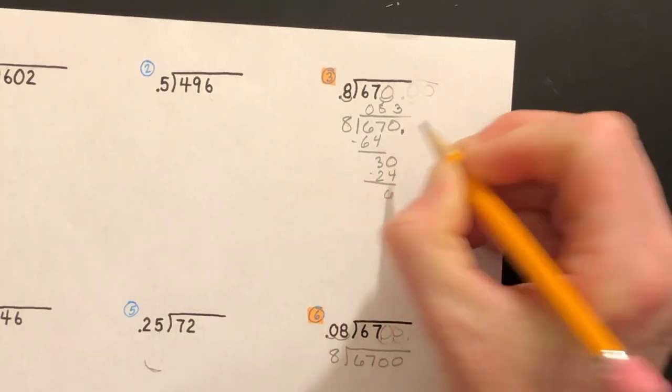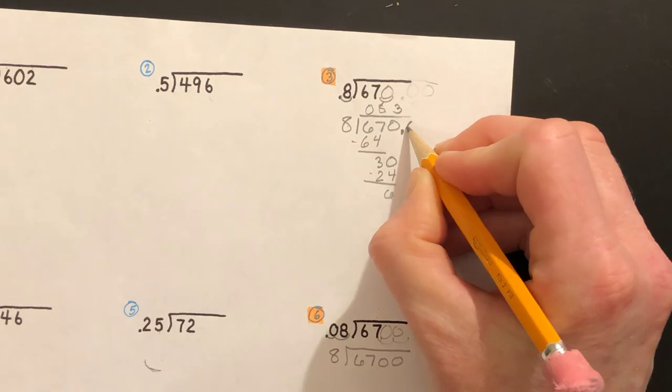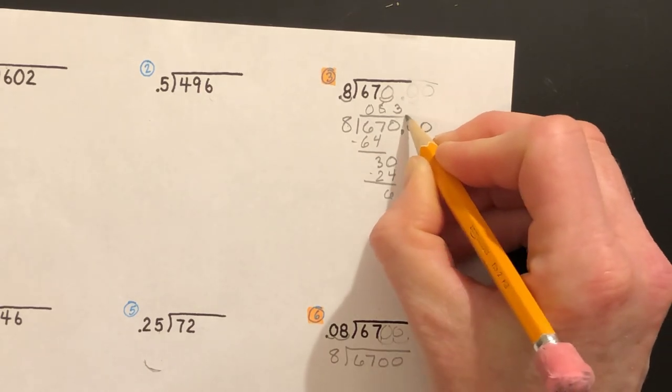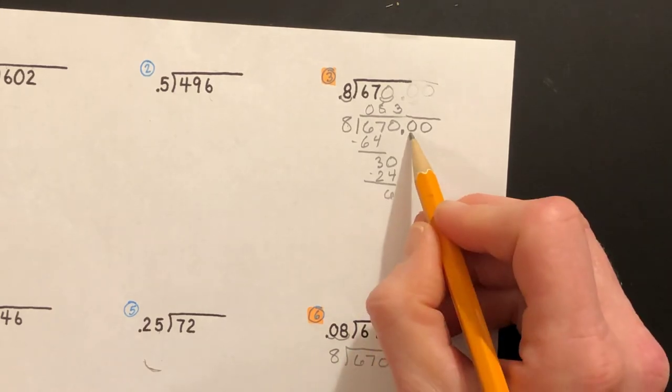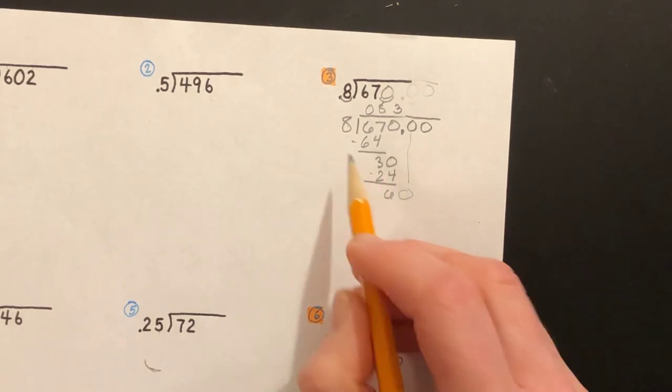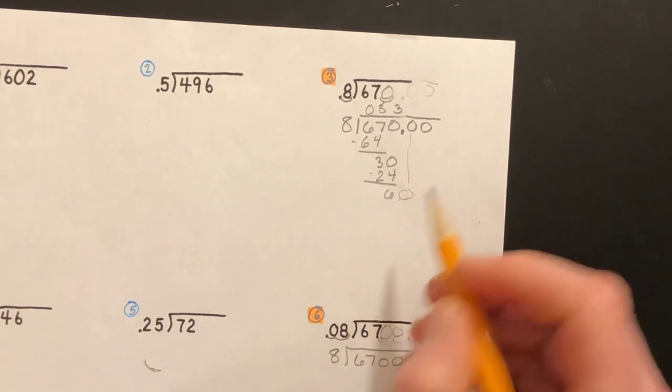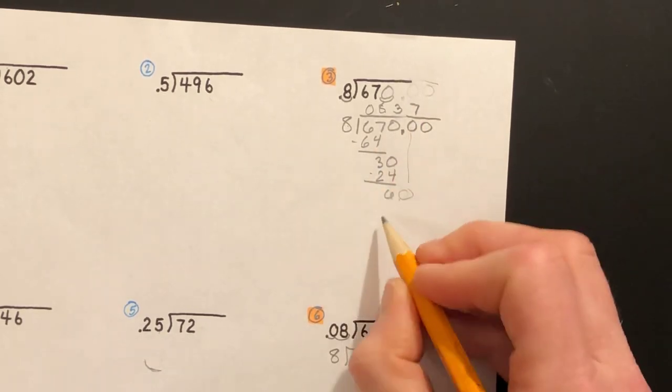I'm going to go ahead and put a decimal here since there's not already one, add maybe two zeros, see how we end up. Now with our remainder we'll bring down the next zero. Eight goes into 60, yes, seven times. Eight times seven is 56.